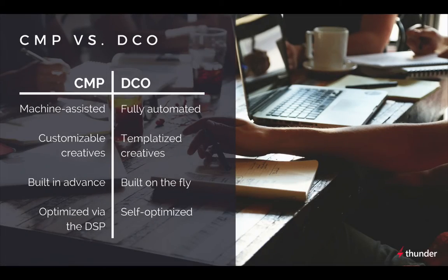CMPs are often compared to Dynamic Creative Optimization technologies, or DCOs. Both CMPs and DCOs create a large number of creatives, are purpose-built for the needs of a programmatic advertiser, and fall under the programmatic creative umbrella. Here are some key differences between CMPs and DCOs.